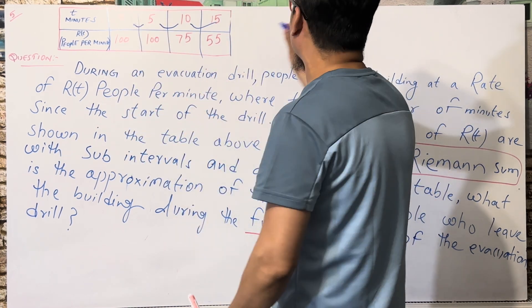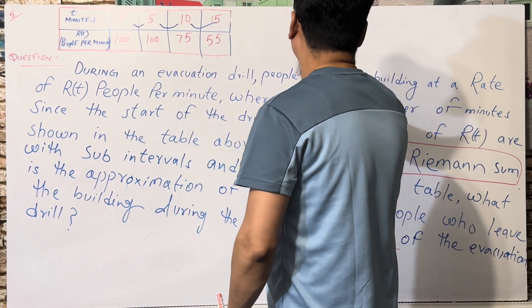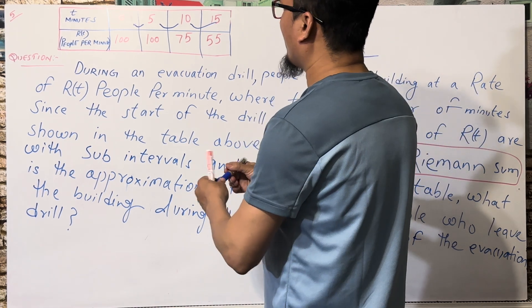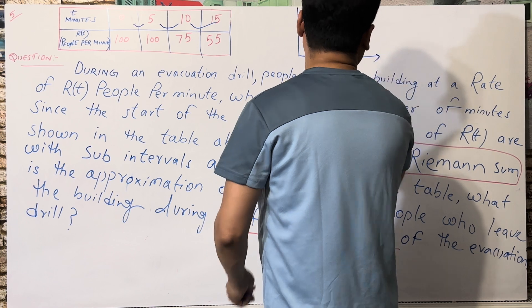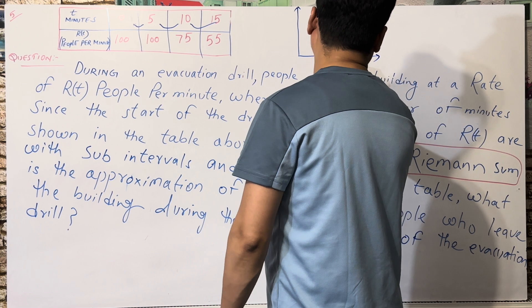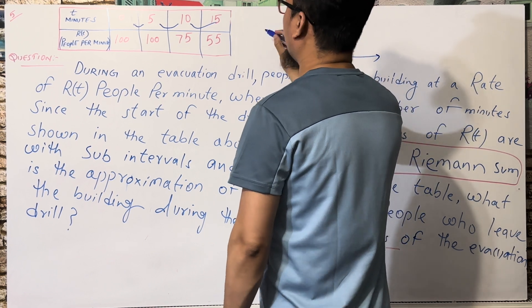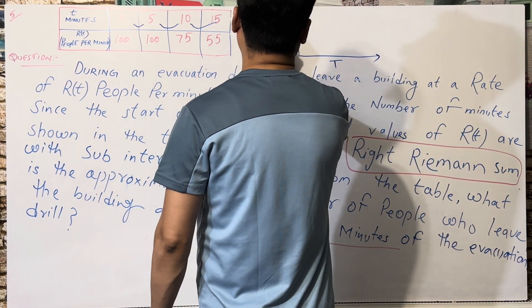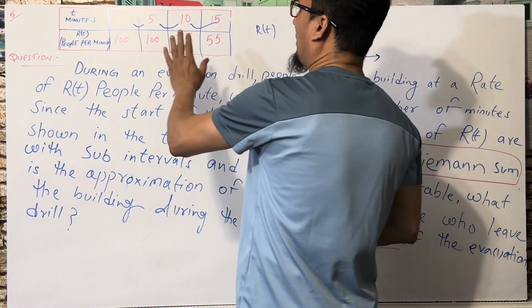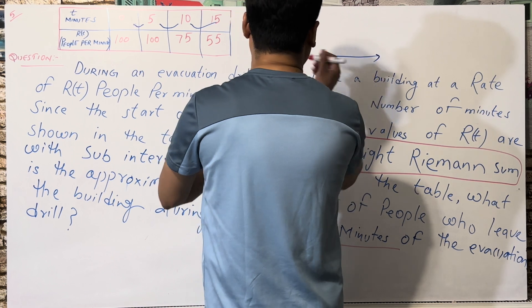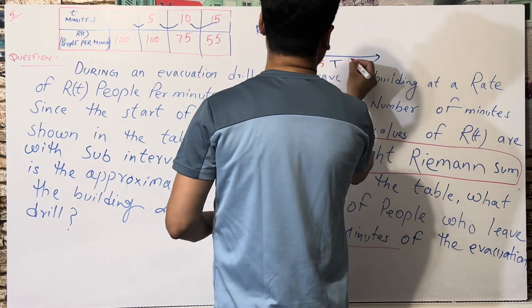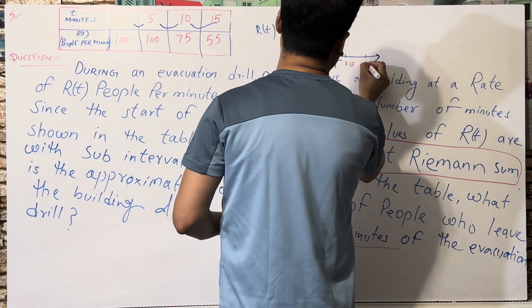I'm going to give you a basic graph so you can see everything clearly. The x-axis represents T, the time in minutes, and the y-axis represents R(T). On this graph: at T equals zero, the value is 100; at T equals five, the value is also 100; at T equals ten, it is 75; and at T equals fifteen, it is 55.